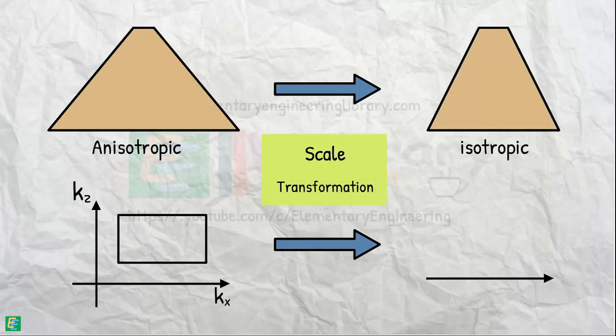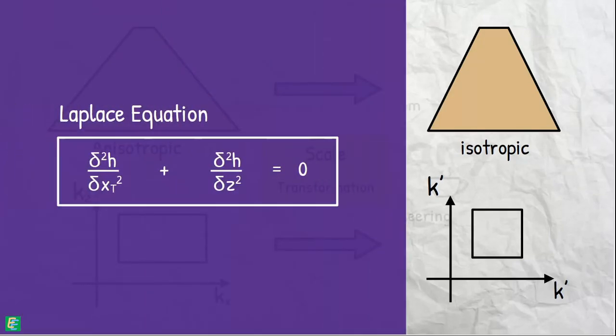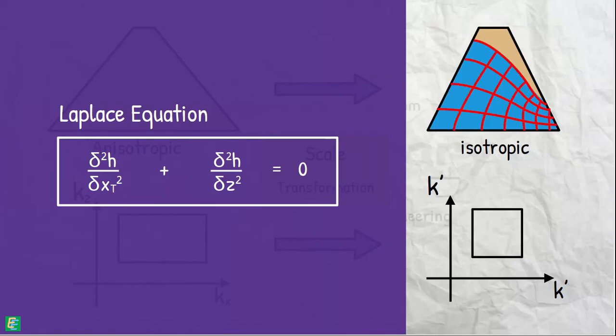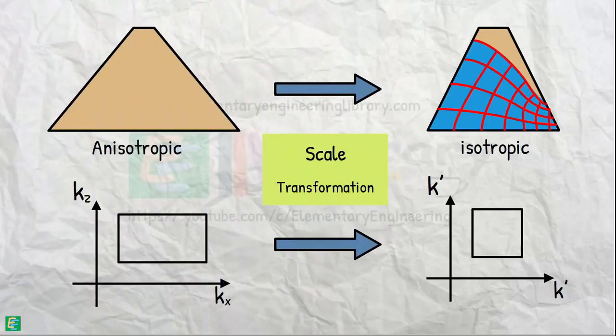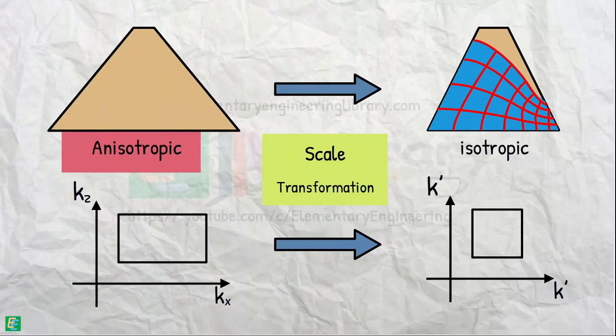To obtain isotropic medium, which has similar properties in different directions and for which the Laplace equation is valid. We did so to construct the flow net and find the solutions to our engineering problems in anisotropic soil.